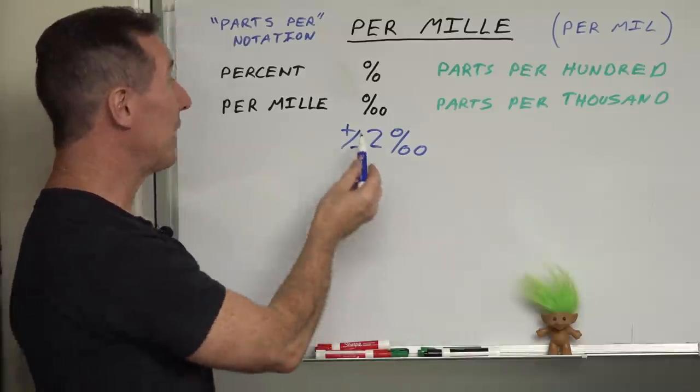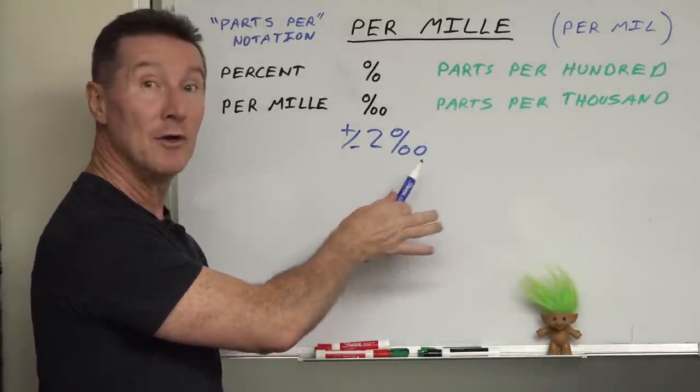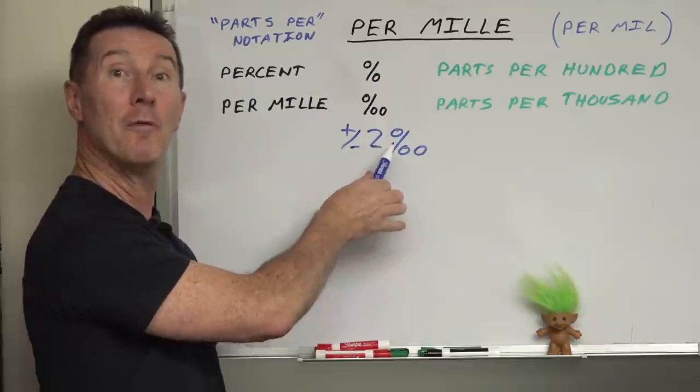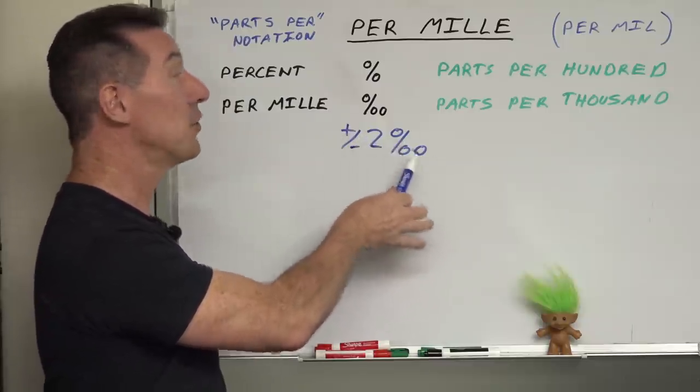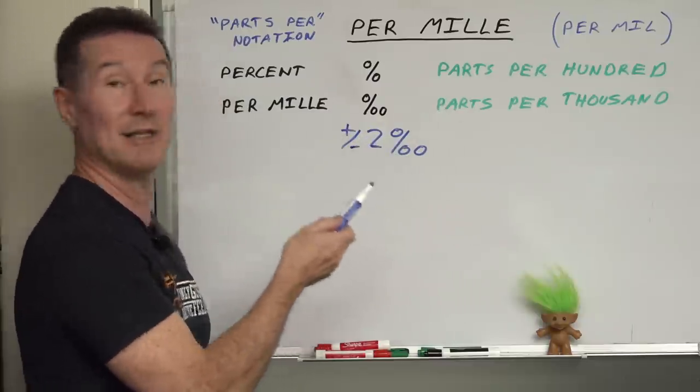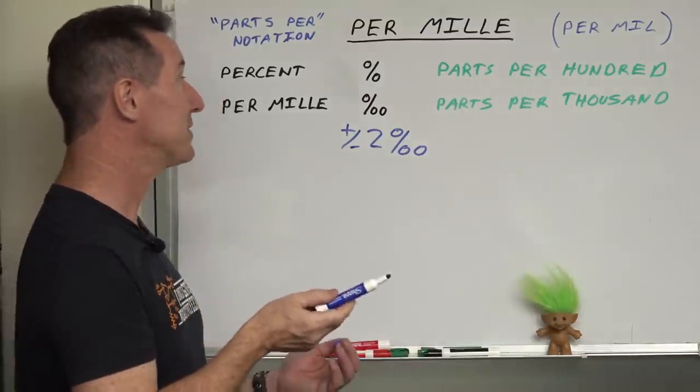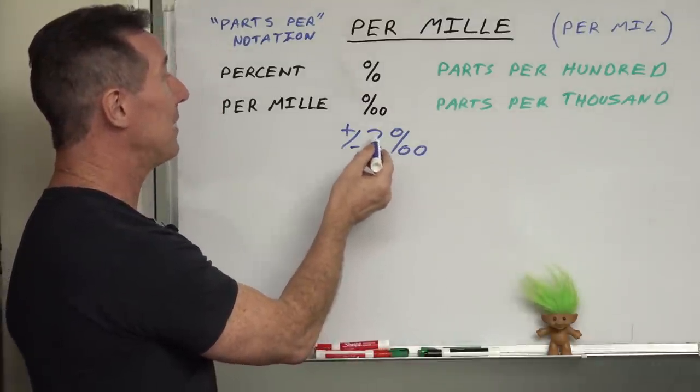So, in the power supply we saw, it was plus minus two not percent, it's per mil. So, plus minus two per mil is the correct way to say it, basically.